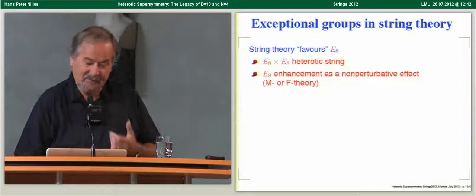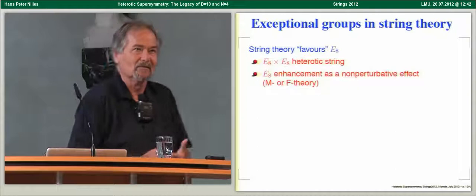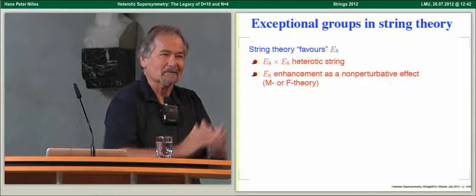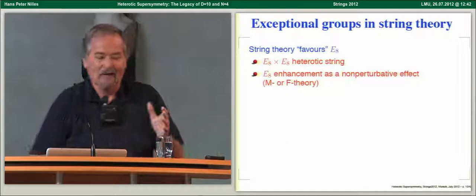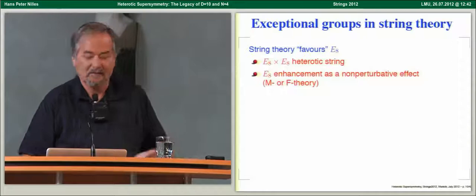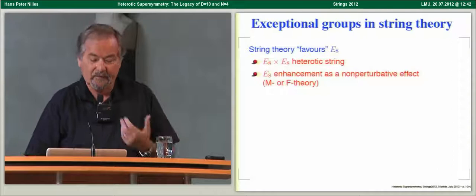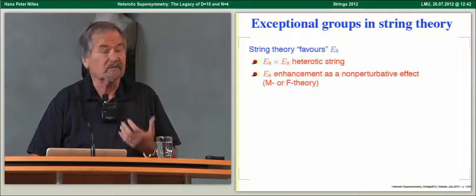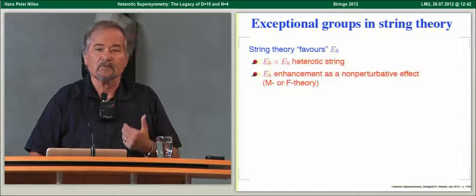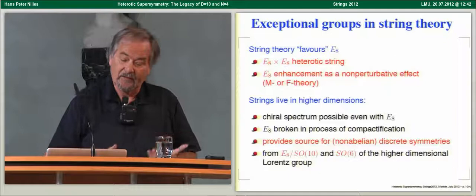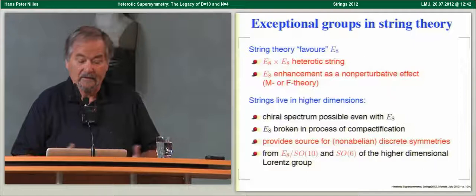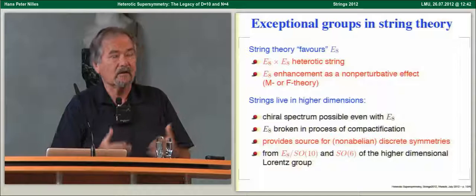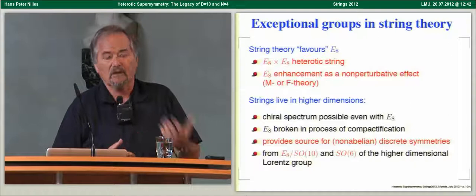The stronger bottom-up argument is that you want spinors of O(16), and once you assume that, you can make an argument that in a successful model you actually need an exceptional group. String theory favors E8 — obviously in the E8 × E8 theory, but also in M- and F-theory where E8 enhancement appears as a non-perturbative effect, and the nice properties of the model come from having E8. Strings live in higher dimensions, so E8 must be broken in compactification. It provides a source for non-abelian discrete symmetries, and the extra-dimensional Lorentz group SO(6) could be the source of an R-symmetry.